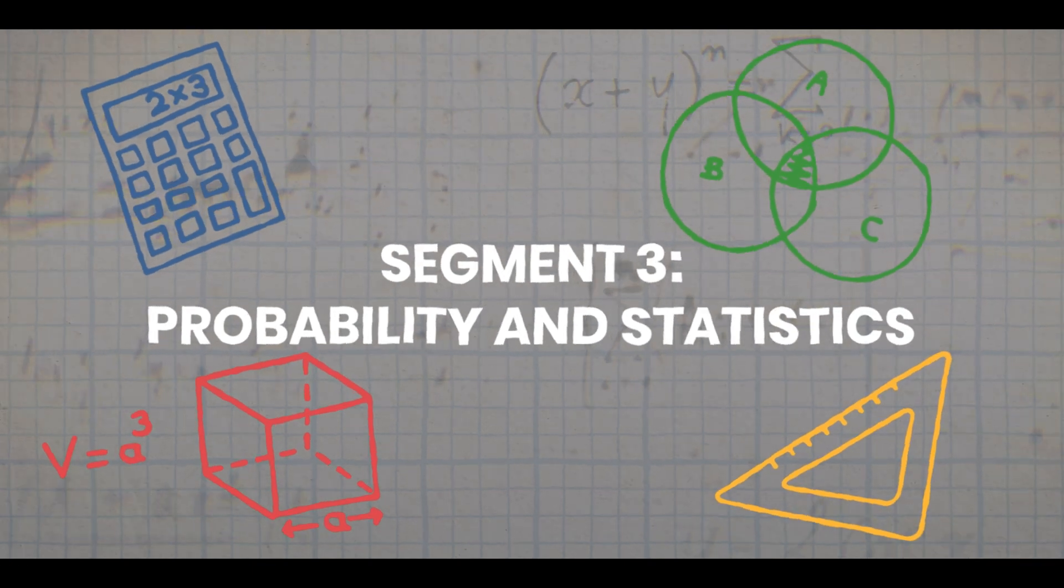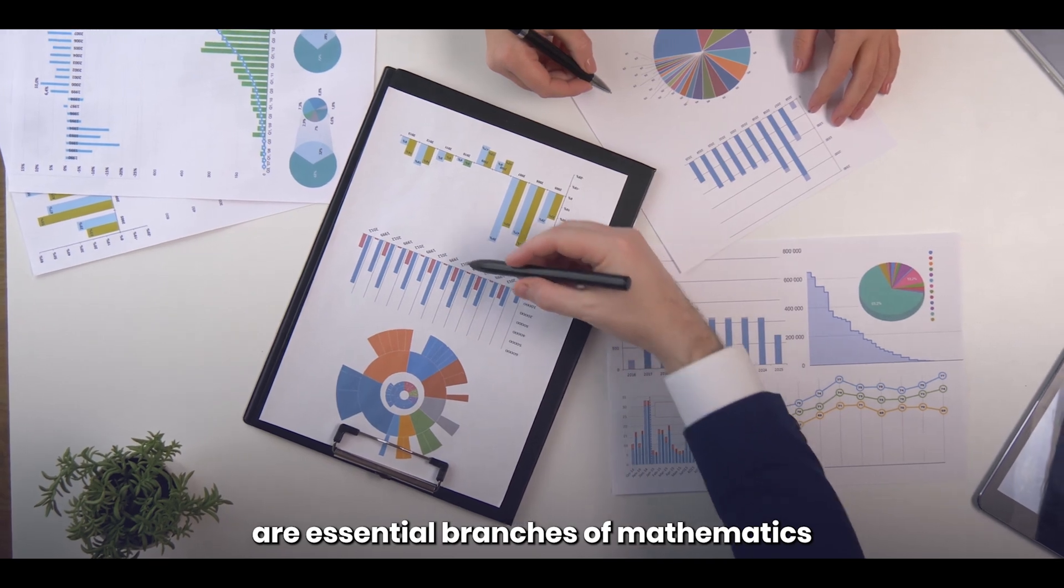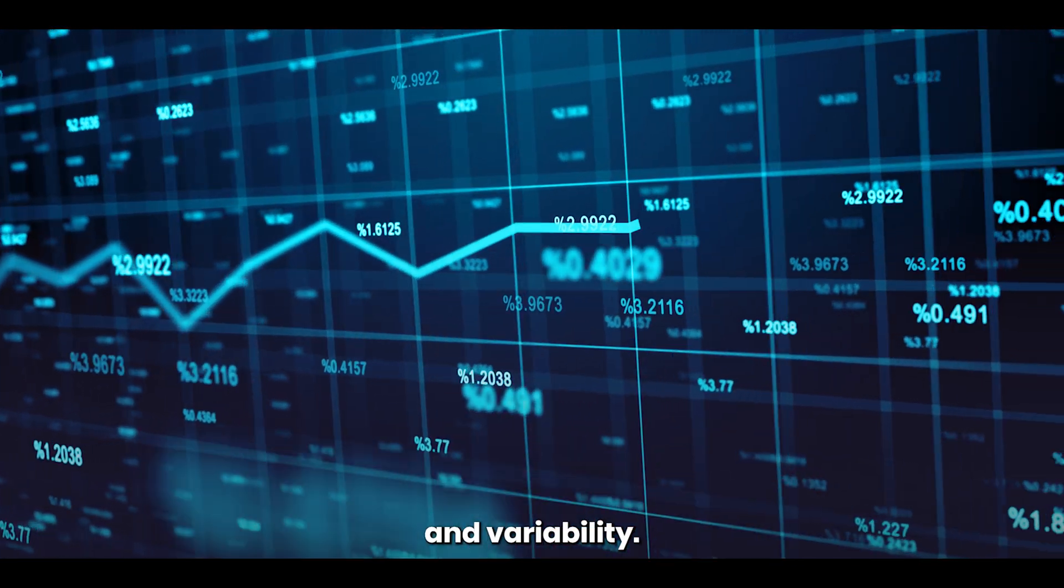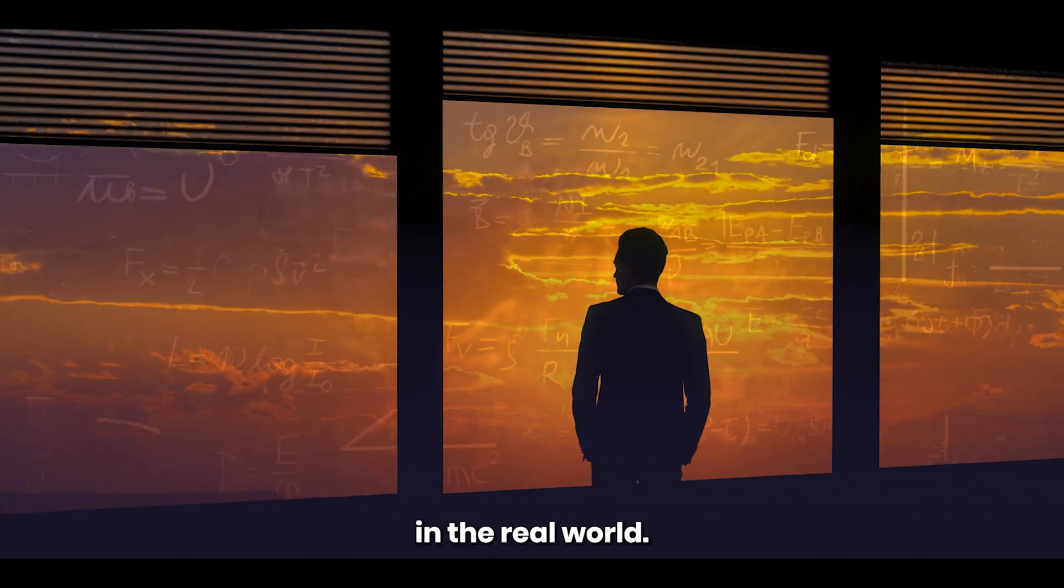Probability and statistics. Probability and statistics are essential branches of mathematics that deal with uncertainty and variability. Let's take a look at how they can be applied in the real world.